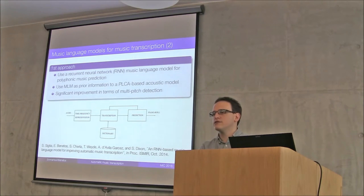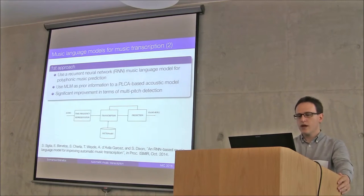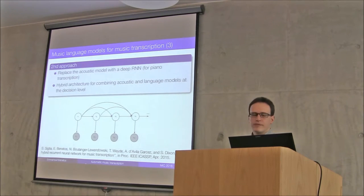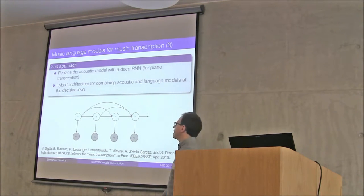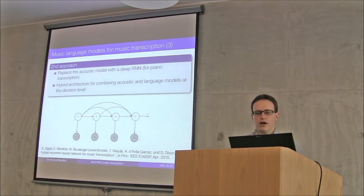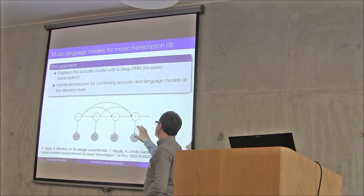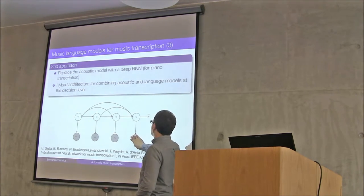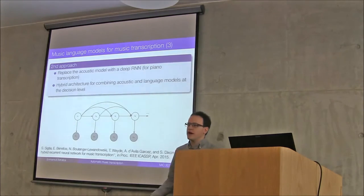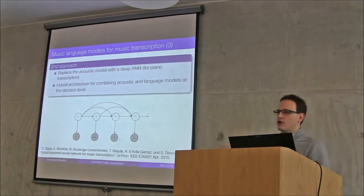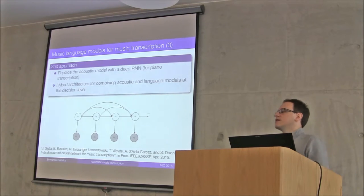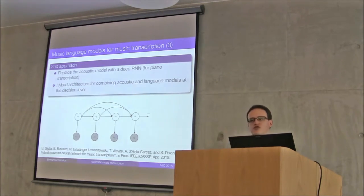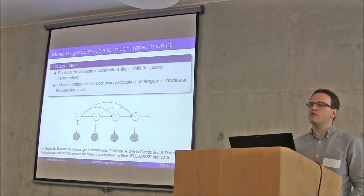This approach was further continued by replacing the acoustic model with a deep recurrent neural network, and coming up with a more principled way of merging acoustic and language information. The diagram shows observations from the acoustic model assumed to be generated by the music language model, connected over time using a latent Markov chain variable. This hybrid acoustic and language scheme also achieved a significant improvement in transcription accuracy.